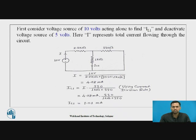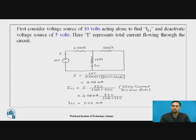While applying Superposition to this problem, we deactivate the 5V voltage source and analyze the effect of the 10V voltage source. The current flowing through the 1 kΩ resistor is labeled IL1, and the total current is represented by I. Using I = V/R, the total resistance is 2.2 kΩ in series with the parallel combination of 1 kΩ and 330 Ω. Total current I is 4.08 mA.